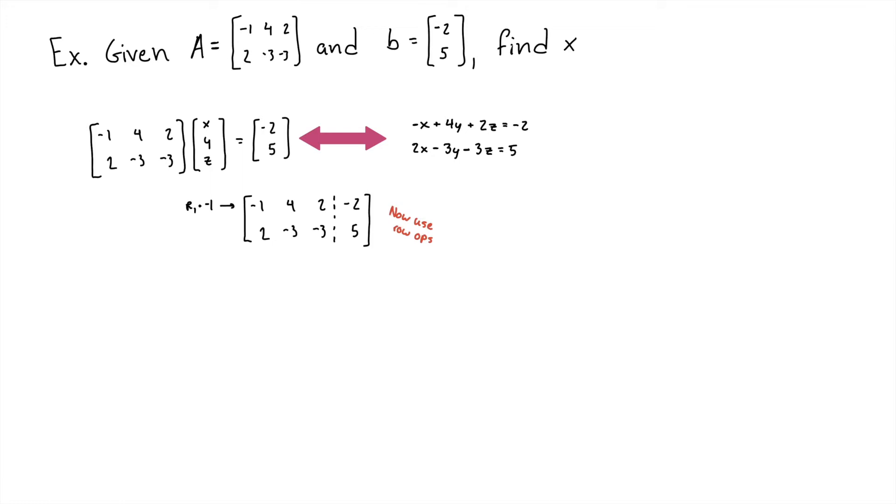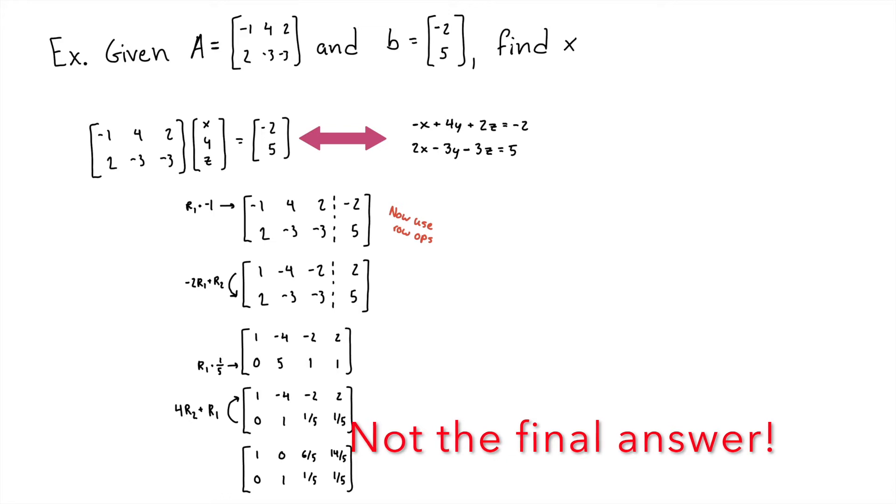For the first row, we're multiplying it by negative 1, which is a scalar. Then we're going to multiply the first row by negative 2 and add it to the second row. We'll take the second row and multiply it by 1 fifth, which is a scalar. Then we'll take the second row, multiply it by 4 and add it to the first row. Finally, we're left with this matrix right here.